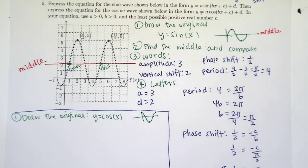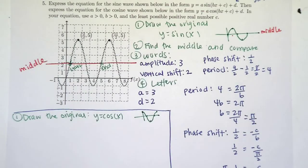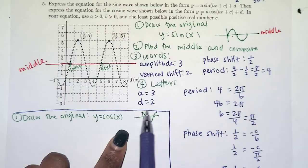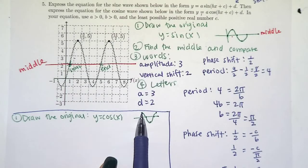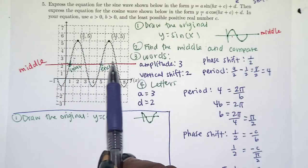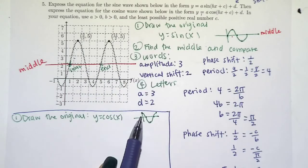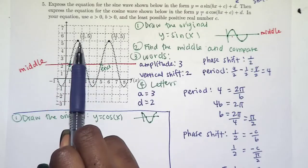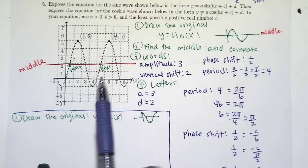All right, we've already found the middle part here. So now we just want to compare. I'll use blue here. We want to compare the starting point of our original and find a starting point to use on this graph up here. Remember cosine starts up high and then crosses the middle. So we want to find a place where our graph starts up high and then crosses the middle.